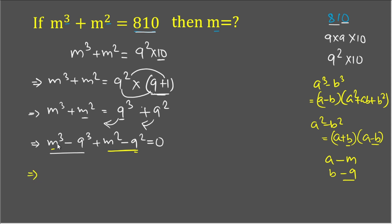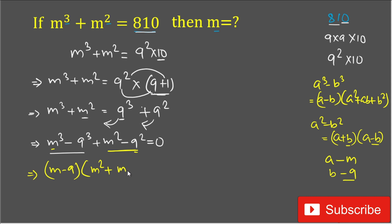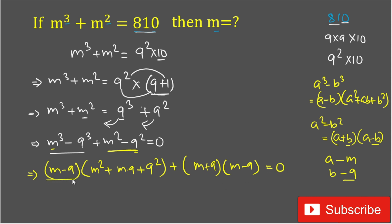Applying the formulas: (m - 9)(m² + 9m + 9²) + (m + 9)(m - 9) = 0. From these two terms, (m - 9) is a common factor, so we take (m - 9) out as the common factor.